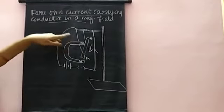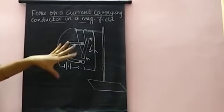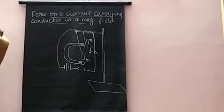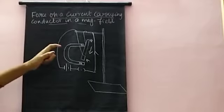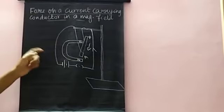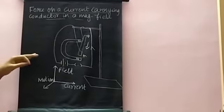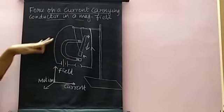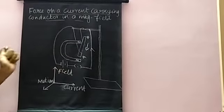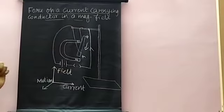The direction of the magnetic force can be found with the help of Fleming's Left Hand Rule. The direction of the force is determined using Fleming's Left Hand Rule.